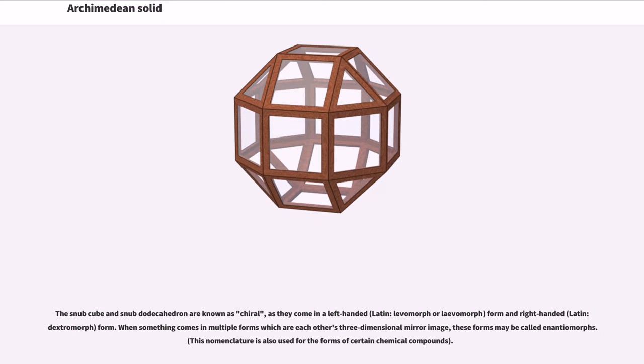The snub cube and snub dodecahedron are known as chiral, as they come in a left-handed (Latin levomorph) form and right-handed (Latin dextromorph) form. When something comes in multiple forms which are each other's three-dimensional mirror image, these forms may be called enantiomorphs. This nomenclature is also used for the forms of certain chemical compounds.